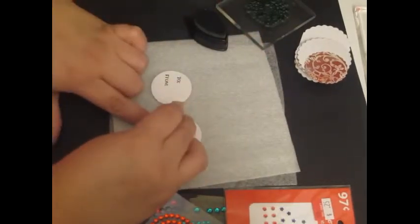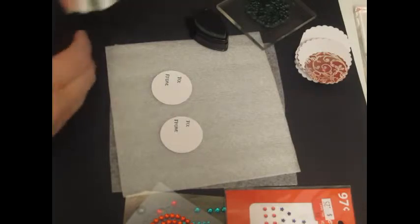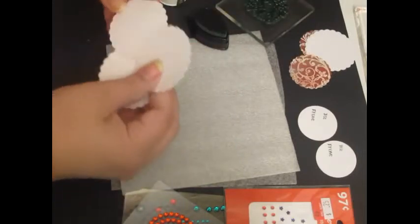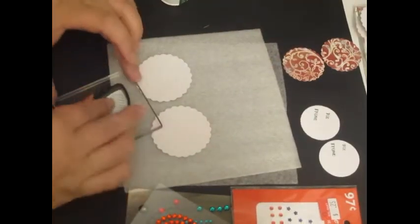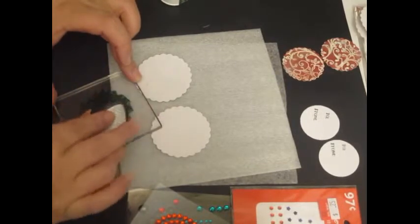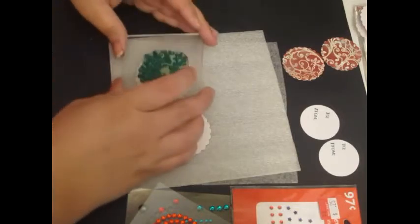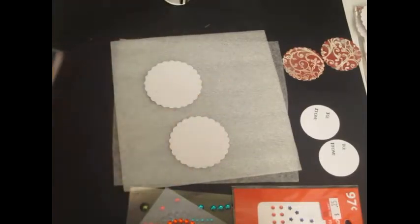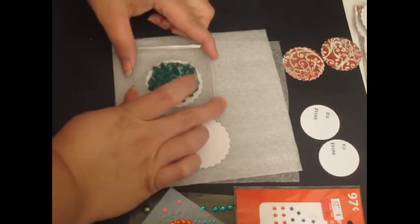And I'm gonna stamp my to and from. These I think are a little bit smaller than the ones I have been using. So there are to and from and we'll set them aside. And then I'm gonna pull up my other circles and I'm gonna grab my stamp here. And I'm just going to, I think I'm better stand up and do this. There we go.